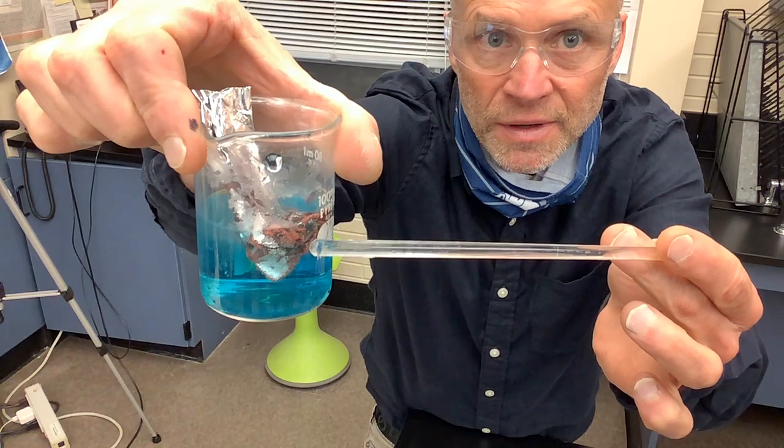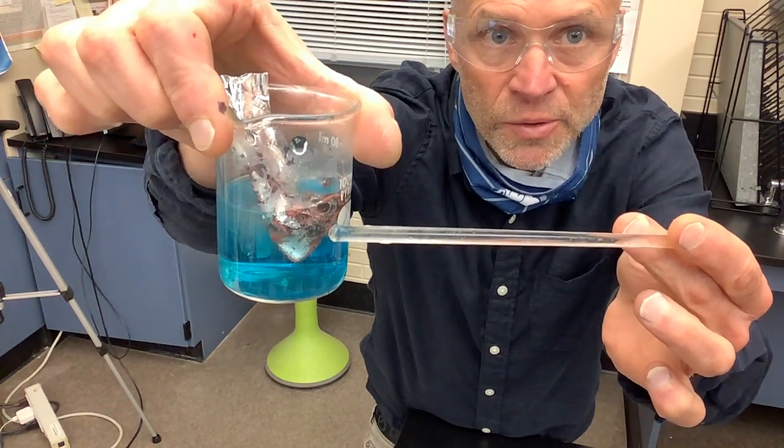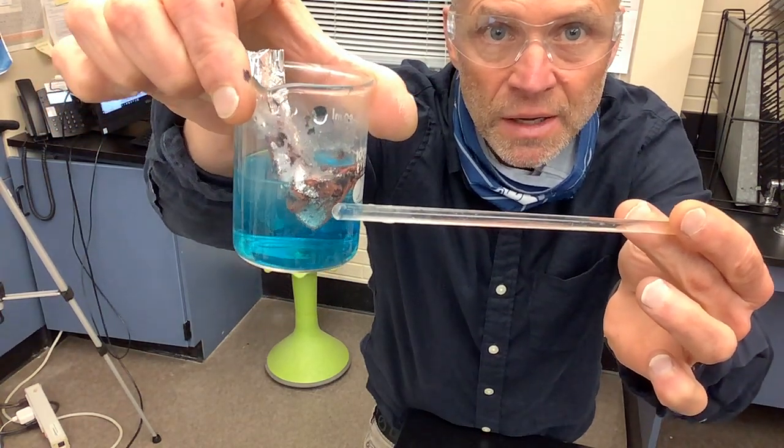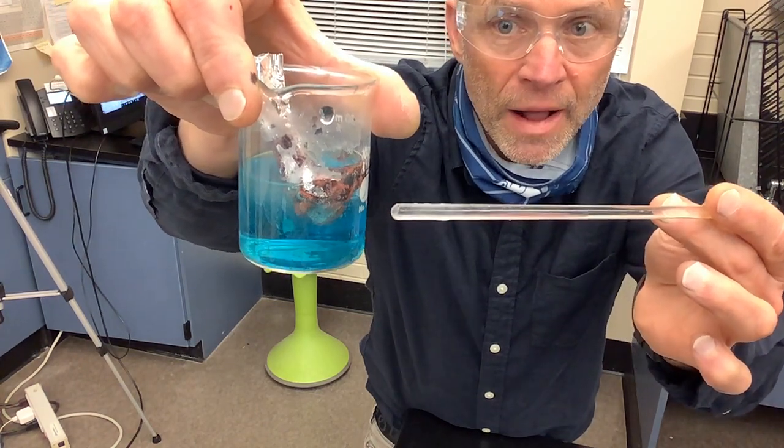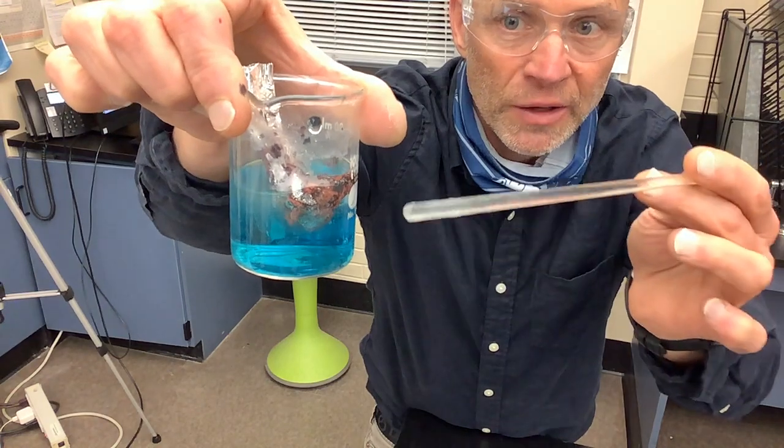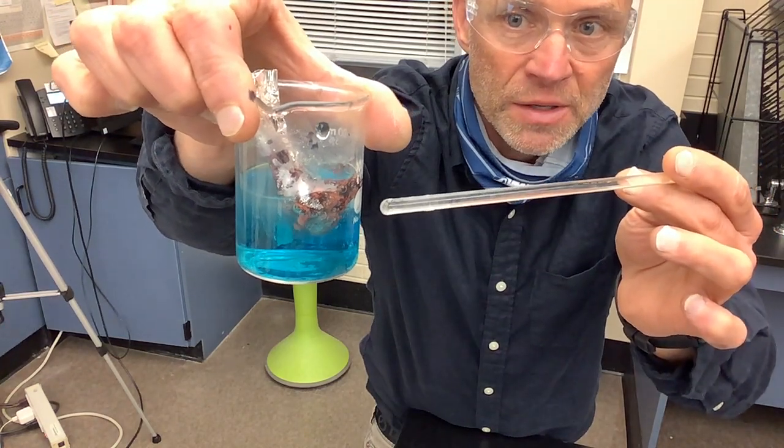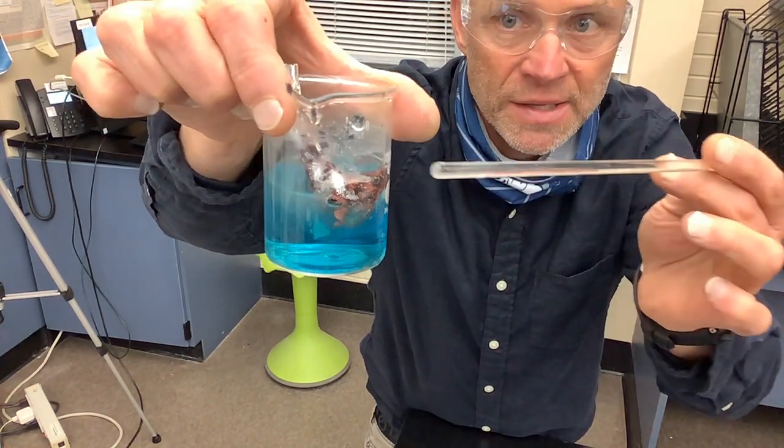So that brown stuff is the copper, right? So the copper is replacing... Sorry. Yeah, the copper is replacing the aluminum. Let me try that again. The aluminum is replacing the copper. So now the copper is coming out of solution as a solid.